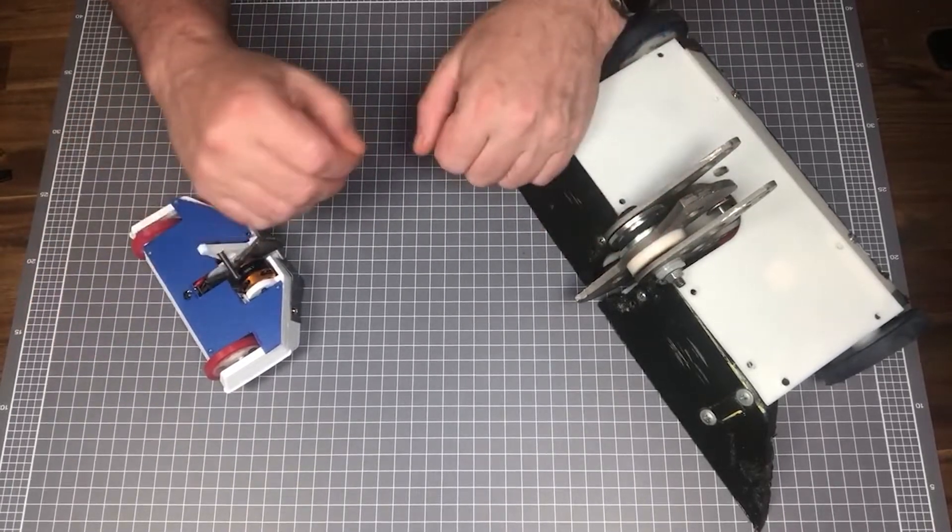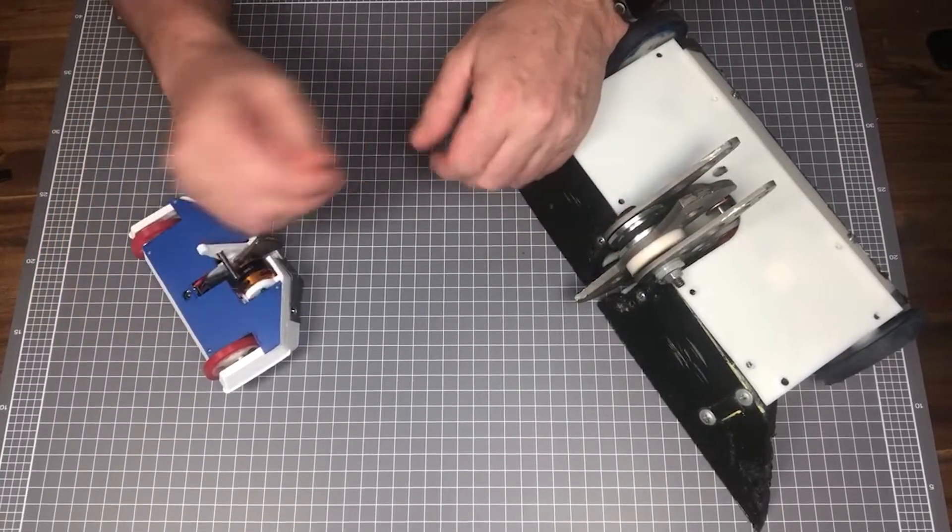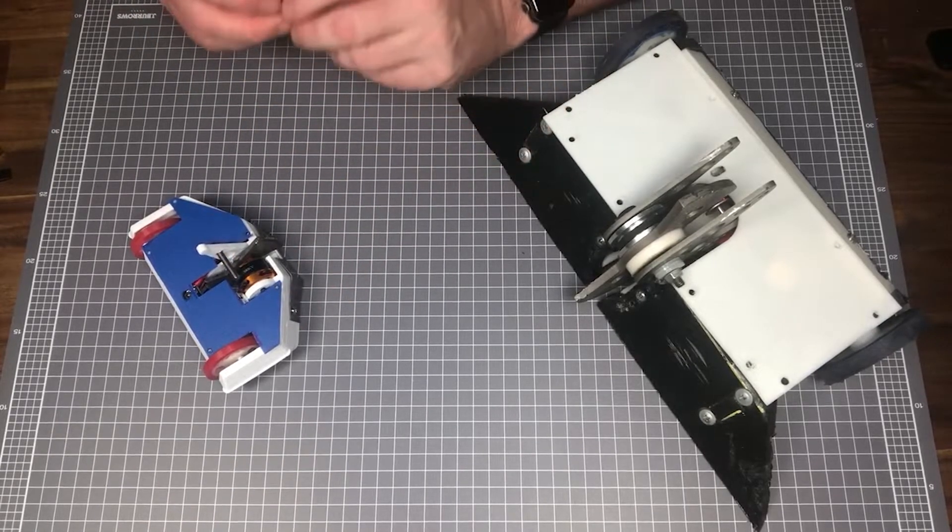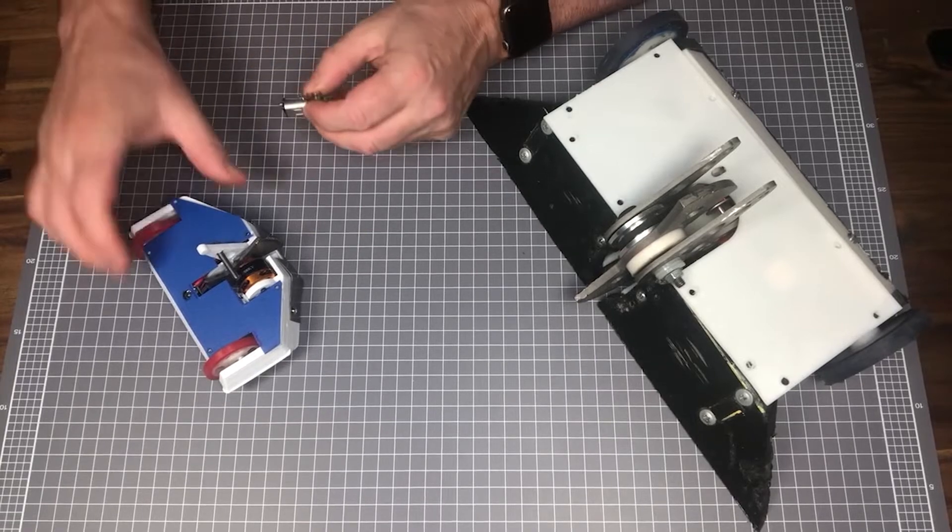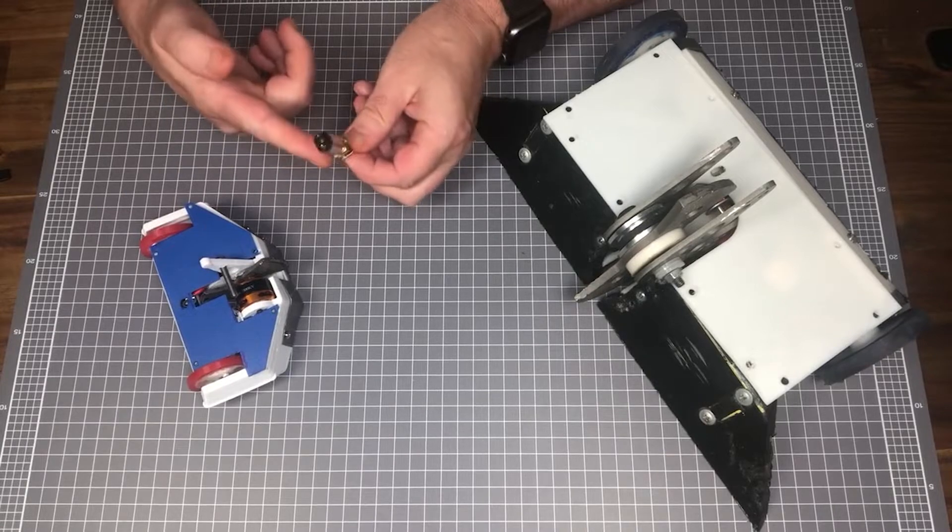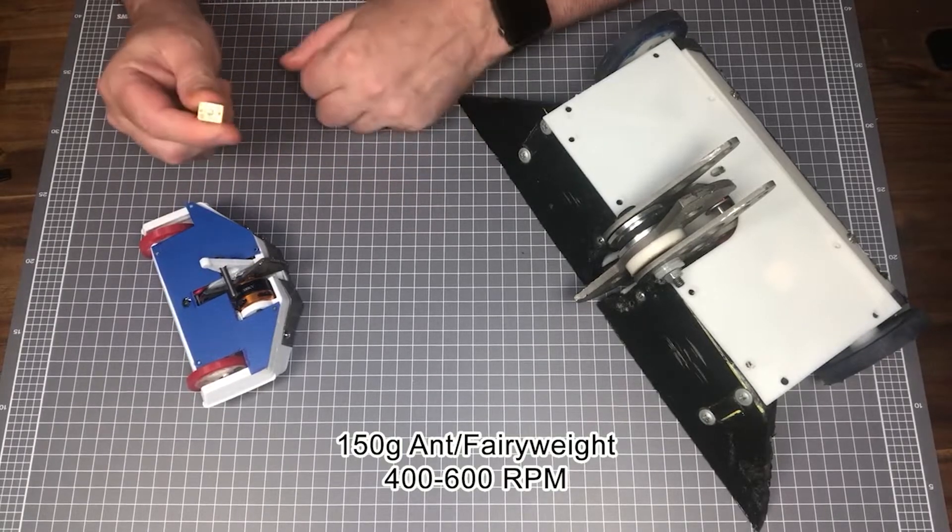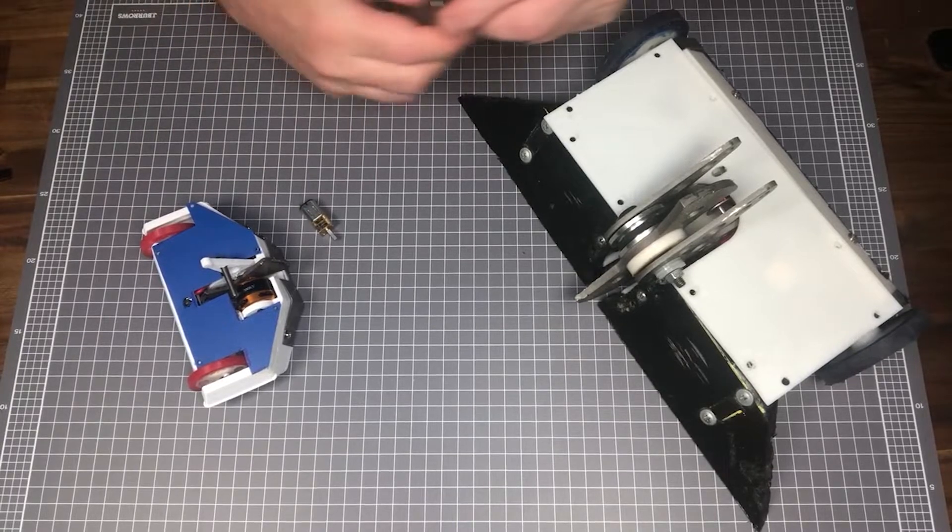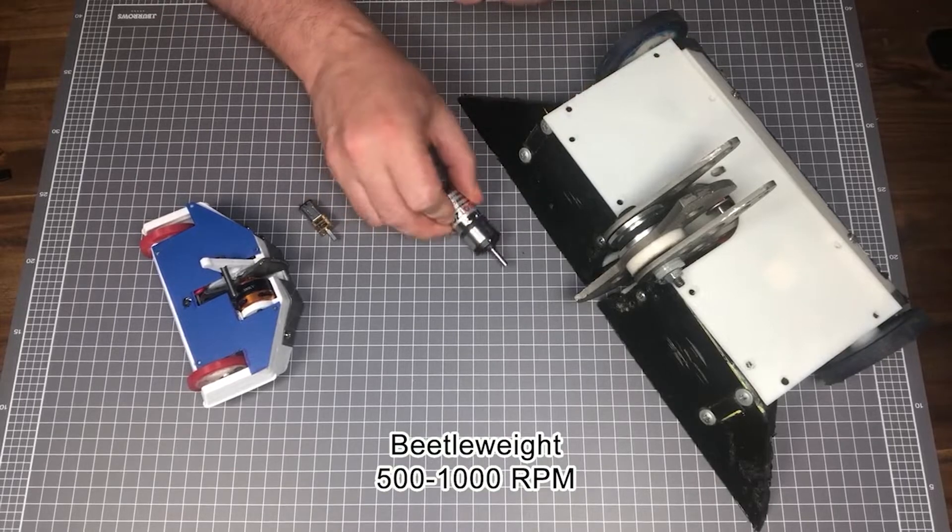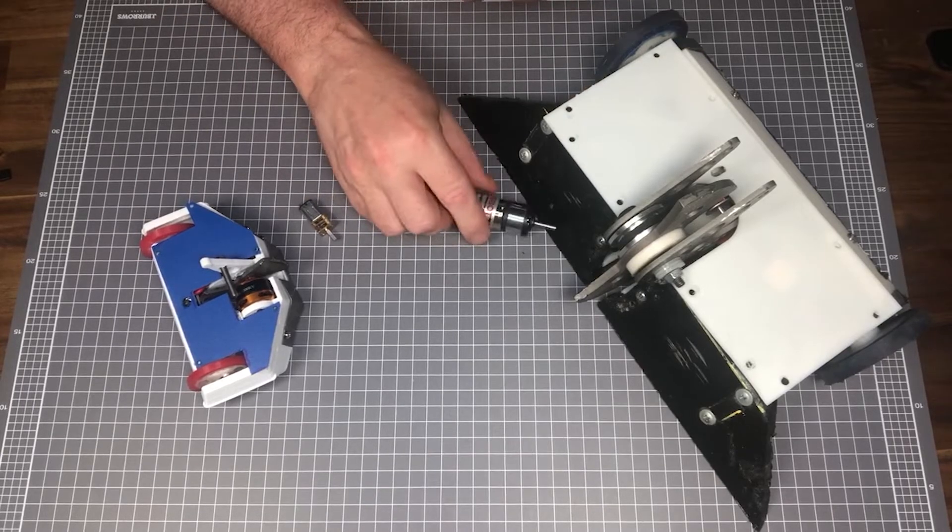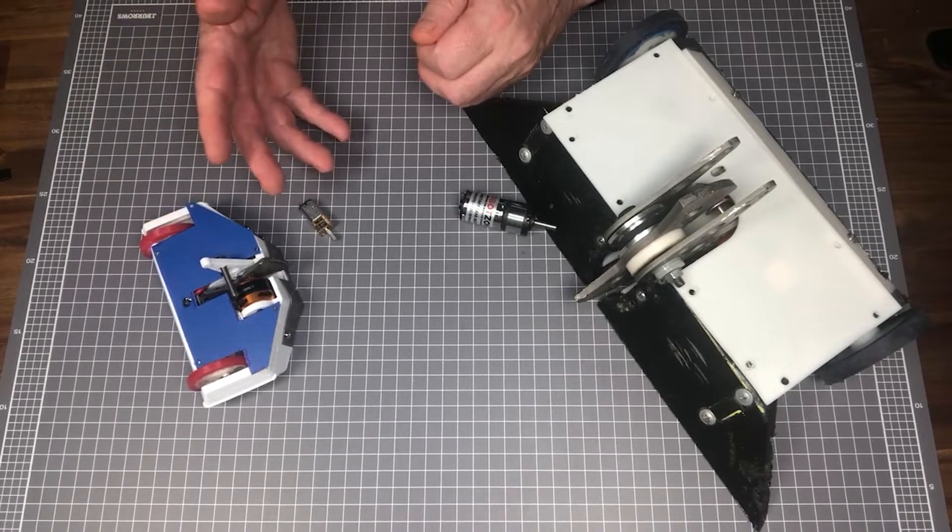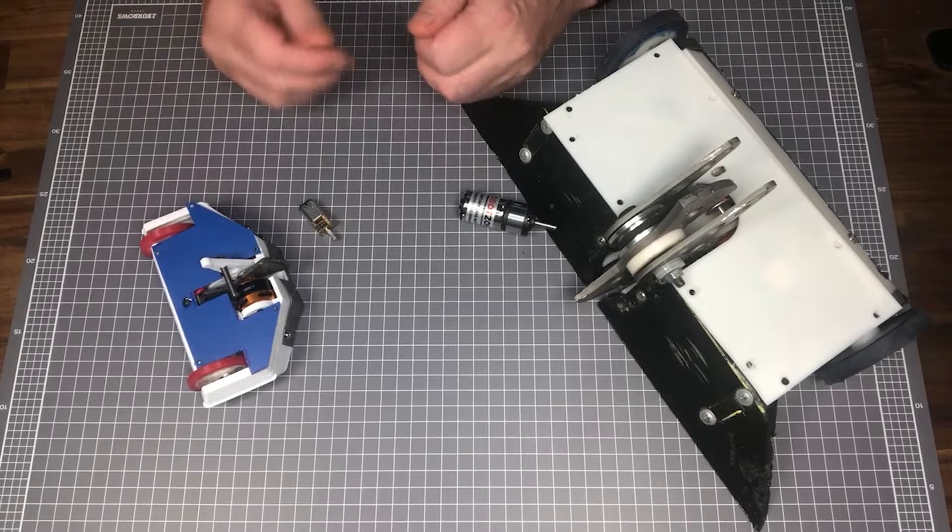Even the size of the arena floor can be a factor to consider. The bigger the arena, the more speed you may want to get across it. So the following suggestions for insect classes are just that. Suggestions. Basically a place to start. A suggested RPM for 150g ant weight or fairy weight class would be around 400-600 RPM. A suggested RPM for a 3lb beetle weight class would be around 500-1000 RPM. Just remember that these are just starter guides. And also don't forget that the size of a wheel is also key. Twice the wheel circumference means twice the speed.